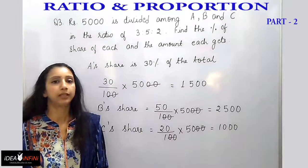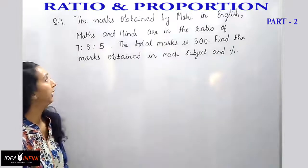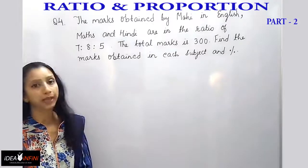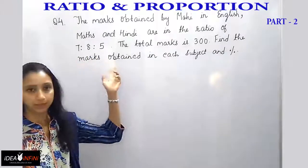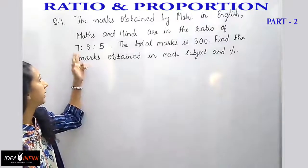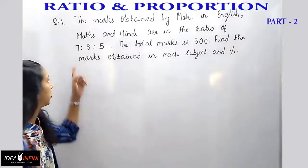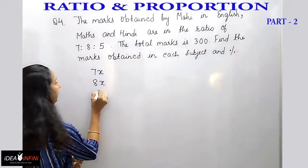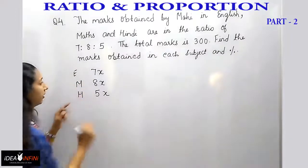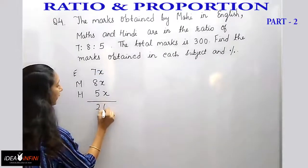Here is another problem: the marks obtained by Mahi in English, Maths, and Hindi are in the ratio of 7 is to 8 is to 5, and the total marks obtained by her is 300. We need to find the marks in each subject and the percentage. Since the ratio is given, we write 7x, 8x, and 5x for English, Maths, and Hindi respectively. Adding them: 7 plus 8 is 15, plus 5 is 20x as the total.